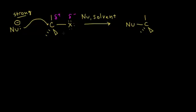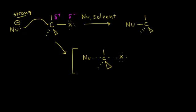Let's draw the transition state. As the nucleophile attacks our carbon and forms a bond, the halogen leaves at the same time — we draw a partial bond for both. Notice how the nucleophile has to attack from the opposite side of the halogen. The halogen is on the right, so the nucleophile must attack from the left — the opposite side of the leaving group.